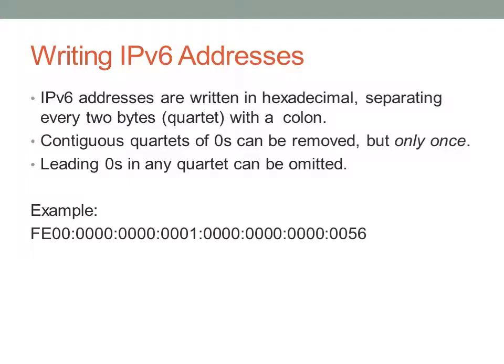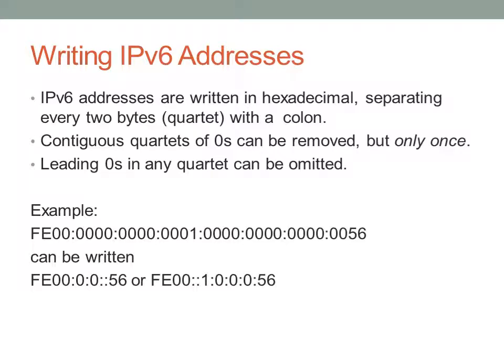Here's an example of a long address — there are tons of zeros we shouldn't have to write out. You can write this address two ways. You can remove the second set of zeros, giving you the version on the left, or remove the first set of zeros, giving you the version on the right. The first option removes three sets of zeros and is probably the shortest way to write it, whereas the second removes only two sets and requires writing three zeros after the one. We've also omitted the leading zeros before '56' — we don't need to write those. However, we can't omit trailing zeros; for example, 'fe00' still needs those two zeros.